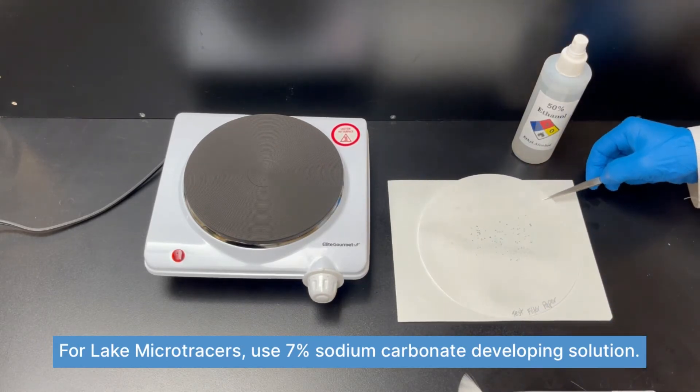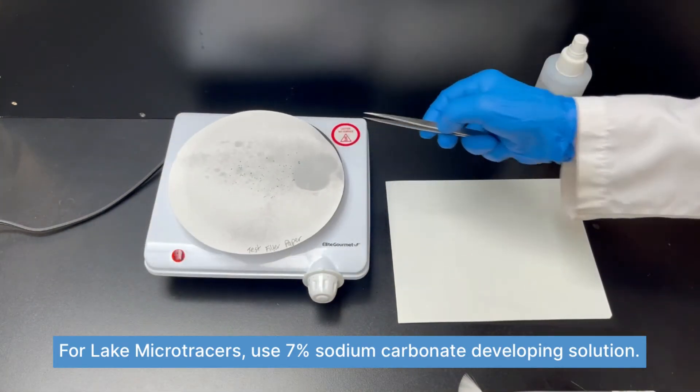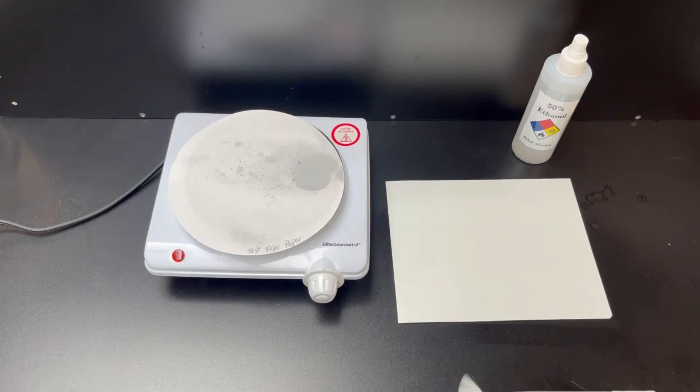Wait a few seconds. As soon as spots begin to develop, place the filter paper onto a hot plate or into an oven. Dry the paper at about 130 degrees Celsius or 270 degrees Fahrenheit. Once the filter paper is dry, remove it from the hot plate or oven.